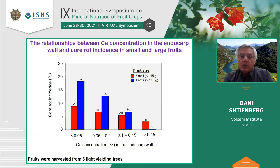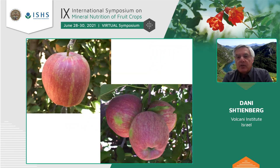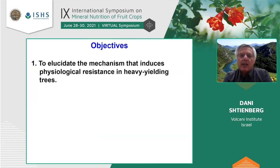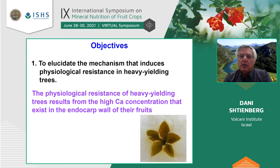The system is not so simple because more factors are involved — for example, the number of fruits in a cluster. Sometimes, mainly when yield is low, fruits are single in a cluster, but sometimes there is more than one fruit per cluster, which also complicates the system. Our first objective was to understand the mechanism, and what we found is that physiological resistance of heavy-yielding trees results from the high calcium concentration in the endocarp wall of their fruit.